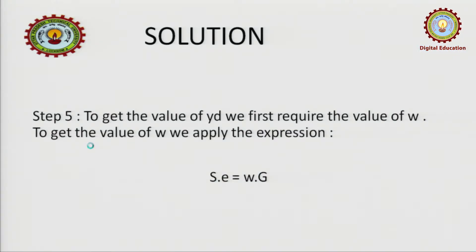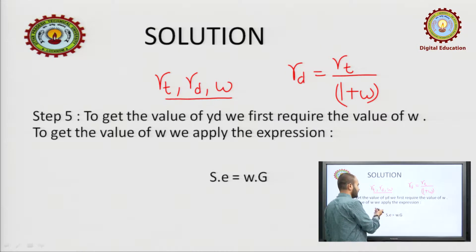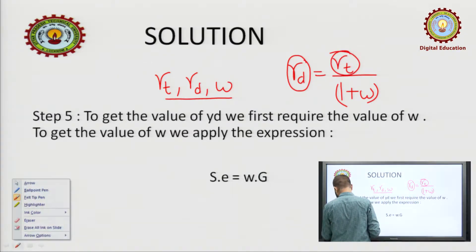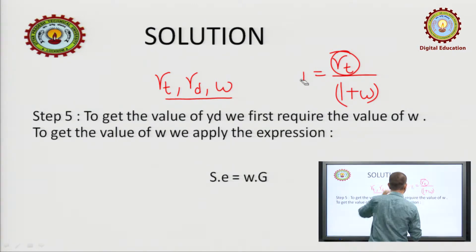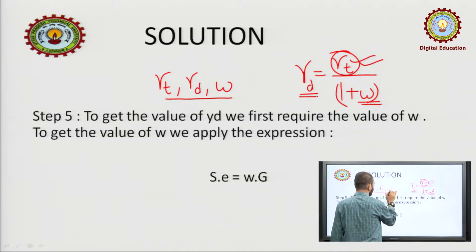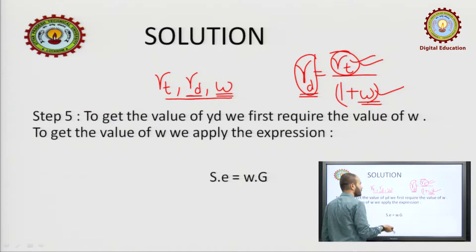Now we were asked for γT, γD, and w. There is an expression γD = γT / (1 + w). We have already found γT. Since we need w anyway as part of the question, let us calculate w first, and then we can find γD straightaway using that formula.